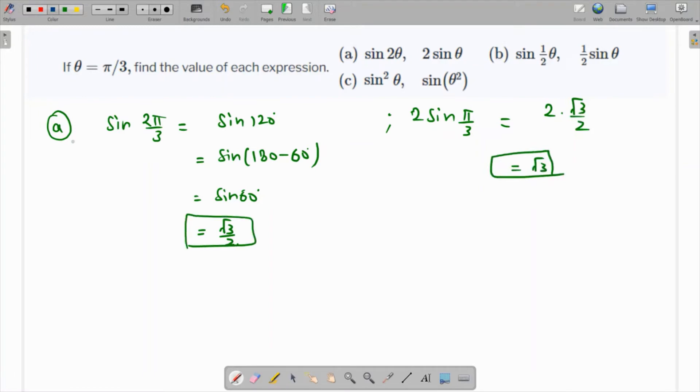Let's talk about part b. We have sine of theta over 2, which means that sine of π/3 over 2 is nothing but π/6, and sine of π/6 is 1/2.